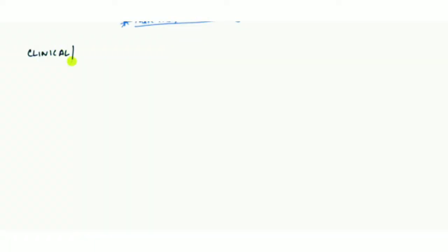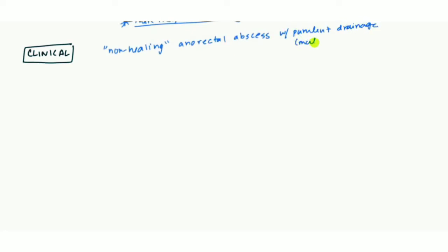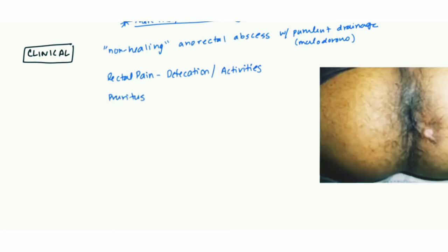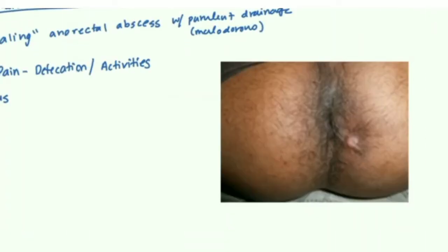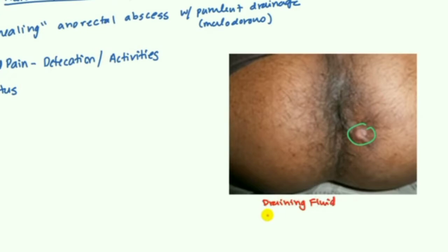Clinical features of fistula. There will be a history of non-healing perianal abscess or anorectal abscess, which may present with purulent discharge. There will be rectal pain while defecation or during any activities. There will also be purulence. In this picture we can see an abscess in the perianal skin draining purulent fluid.